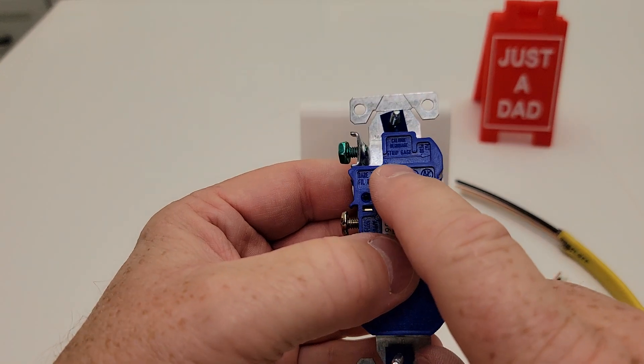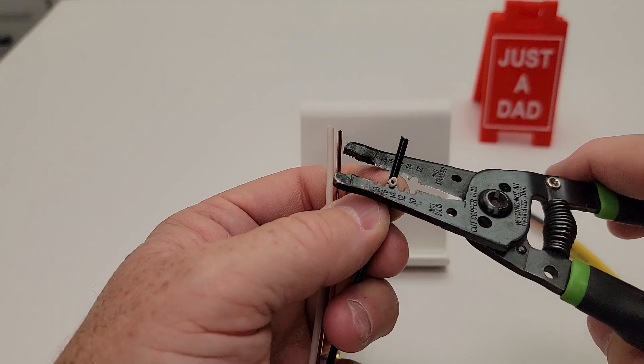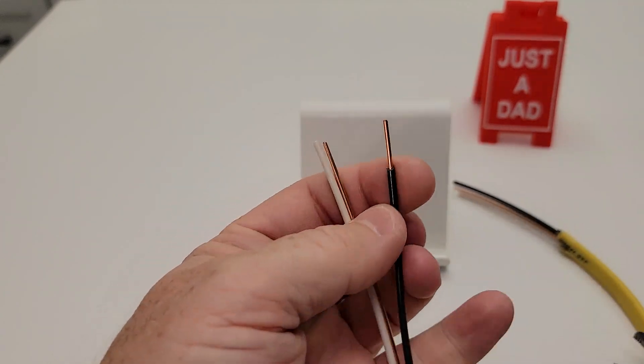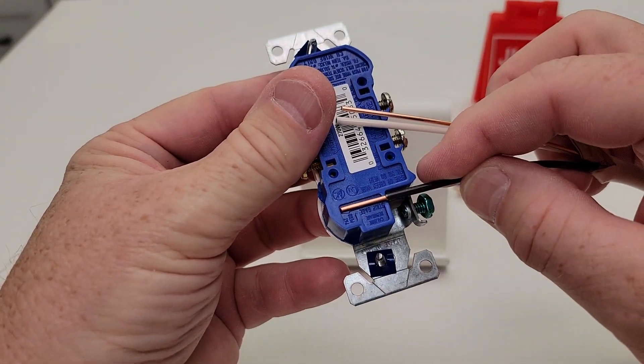I'm going to show you the 14 gauge first. The receptacle has a strip gauge on it right there. So you're going to get your wire strippers, make sure you're on the 14 gauge, strip some back, and verify that it's the right length. That's the right length.